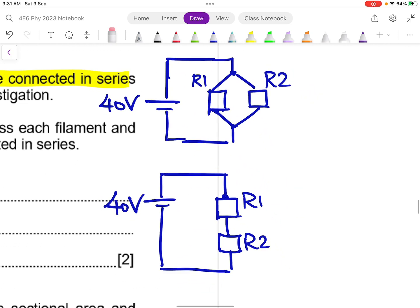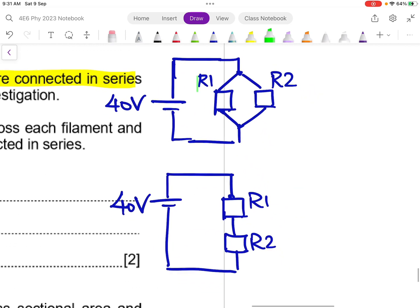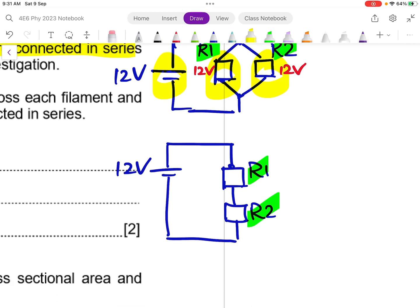So at the very beginning, I have two filaments, R1 and R2, connected to a 12 volt supply. Then the question is saying now R1, R2 is in series. So if you recall in parallel, the PD across parallel components are the same. So because of that, I can easily deduce that my voltage is going to be 12 volt, 12 volt.